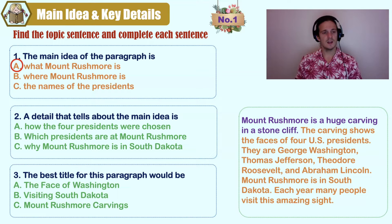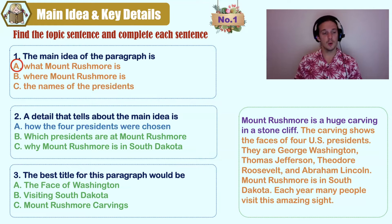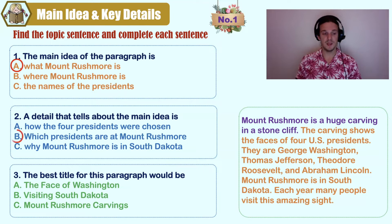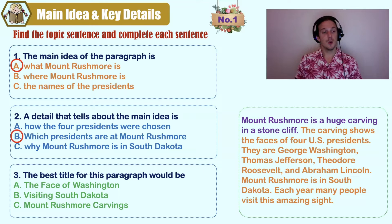A detail that tells about the main idea: A) how the four presidents were chosen, B) which presidents are at Mount Rushmore, C) why Mount Rushmore is in South Dakota. Only one of these answers is stated in the paragraph. It's B — we find out the four names of the presidents. We don't find out how they were chosen, and we don't find out why it's in South Dakota.